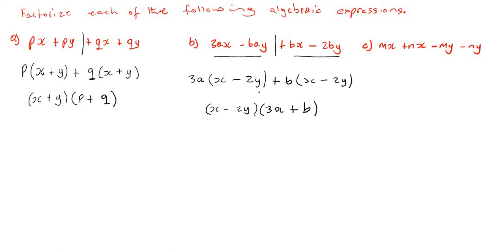Another way to look at it: whatever is on the outside of the brackets forms the second bracket — 3a and b — so this is fully factorized. Now the third example, again factorizing by grouping. Splitting into pairs: the first pair has mx and nx. x is common to both, so we factor out x. mx divided by x leaves m, and nx divided by x leaves n, giving x(m + n).